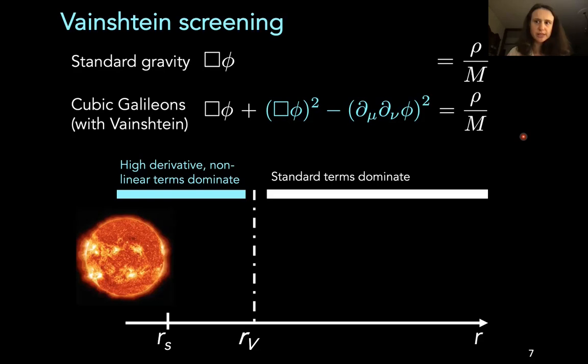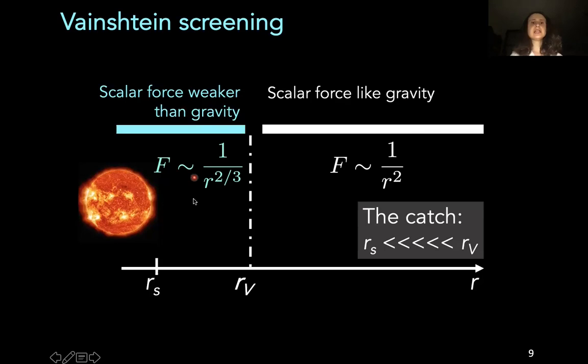So here I'm showing you the equation for standard gravity. So this is the Poisson equation that we all know. And below is the equation regulating a model called cubic Galileon. It's just the simplest model displaying Vainshtein screening. Consider a situation where you have a massive source in space. It turns out that closer to the source, these terms in aquamarine dominate, whereas further away from the source, the standard white terms dominate. It turns out that this means that closer to the source, your scalar force is weaker than gravity and scales like the radius to the two-thirds. Whereas further away from the source, outside of the Vainshtein radius, the standard behavior is recovered and your scalar force scales like gravity.